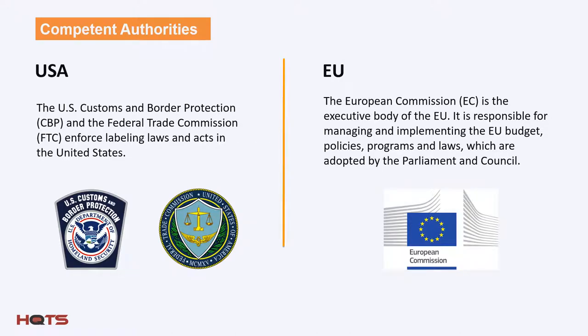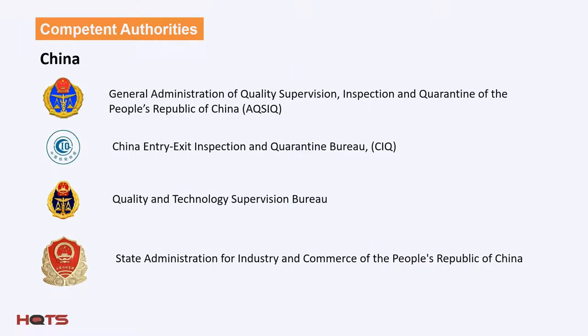The authorities responsible for enforcing labeling laws in the USA are Customs and Border Protection and the Federal Trade Commission. In the EU, it's the European Commission. There are four authorities in China that enforce regulations regarding textiles and apparel, including labeling requirements: the AQSIQ, the CIQ, the Quality and Technology Supervision Bureau, and the State Administration for Industry and Commerce, as well as local administrations for Industry and Commerce.